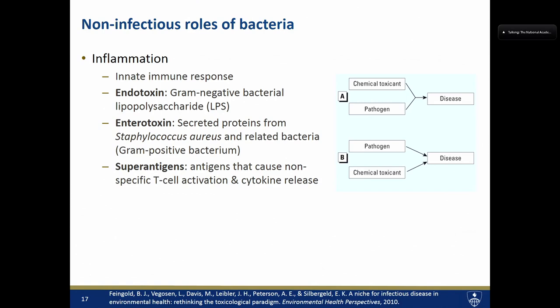I think a lot about the non-infectious roles of bacteria. Bacteria can elicit innate immune responses, driving pieces of the immune system that are just part of who we are. Endotoxin — the lipopolysaccharide coat of gram-negative bacteria — can cause a pyrogenic or fever response with a lot of inflammation. My favorite bacterium, Staph, produces enterotoxin proteins. Not every strain carries the genes for this, but these enterotoxin proteins are essentially superantigens — they cause nonspecific T-cell activation and cytokine release upon exposure, and can really drive a lot of inflammatory processes.